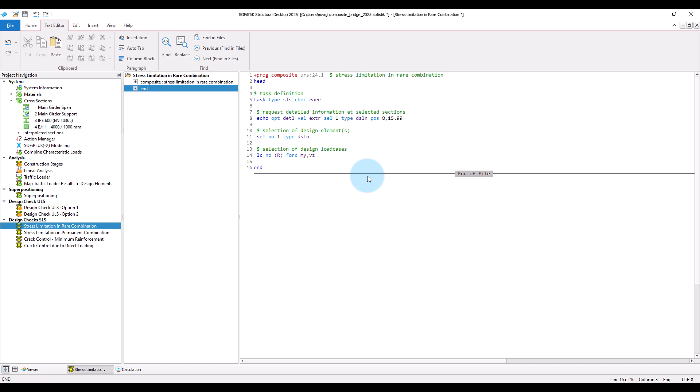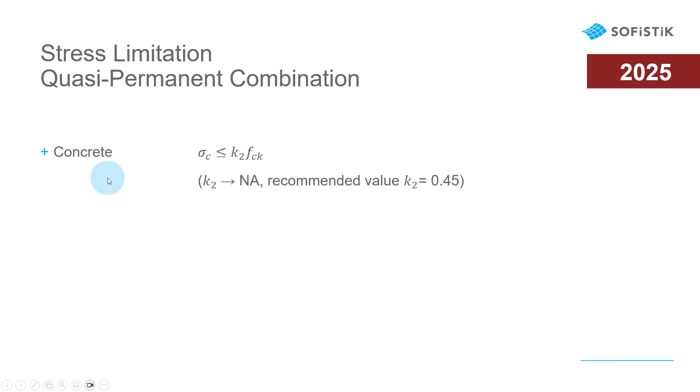Next, we will do the check for the stress limitation in the quasi-permanent combination. This check is about limiting the compression stress in the concrete to make sure that we do not have to take care about non-linear creep effects. The exact value for the stress limit depends on the national annex. Eurocode recommends limiting the compression stress in the quasi-permanent combination to 45% of the characteristic concrete compression strength.